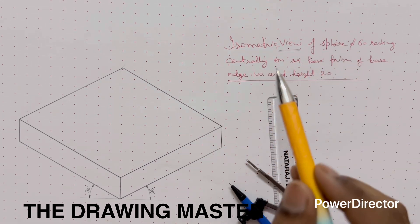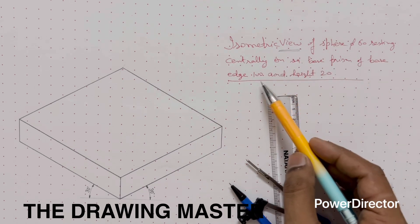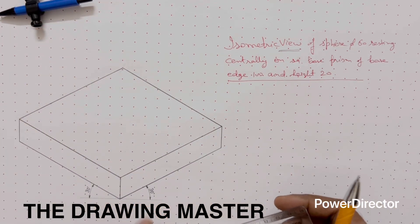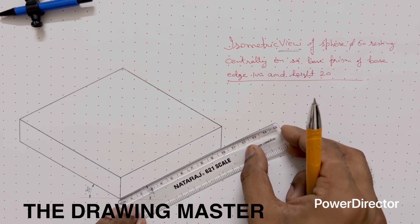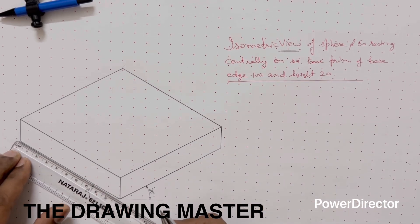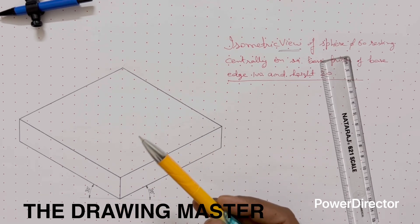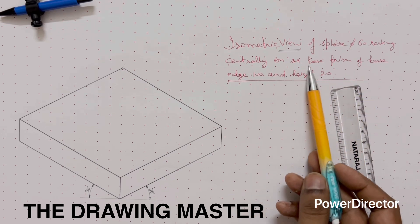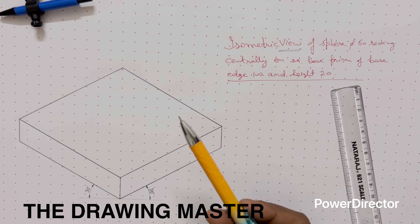The square base prism of base edge 100 and height 20 — I have already prepared it. You can check the dimensions; both side angles are 30 degrees, as we use in isometric view and projection. This is 100 and this is 100. One video is already available in the playlist on how to prepare the isometric view of a square base prism, so you can go through that.